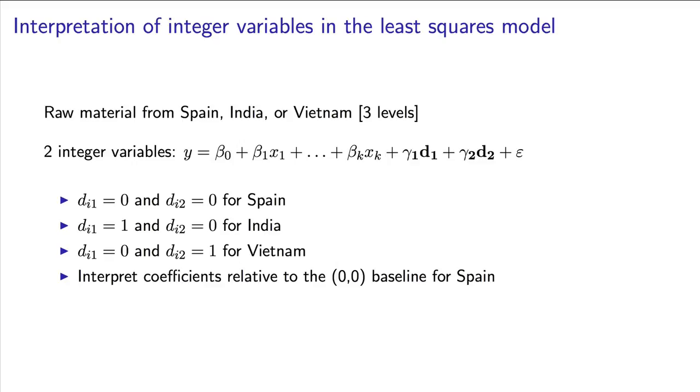Now let's go interpret the d1 coefficient. It is the average change in y expected when we use raw materials from India as compared to Spain. In other words, it's the incremental amount by which y changes when we process raw materials from India compared to our baseline of Spain. Can you interpret the d2 value on your own? You should interpret it as the incremental effect on y when we move our raw material supplier from Spain to Vietnam. The incremental amount from Vietnam to our baseline of Spain. Always be clear on those individual interpretations. It certainly gets more messy when you've got multiple integer levels in your model.